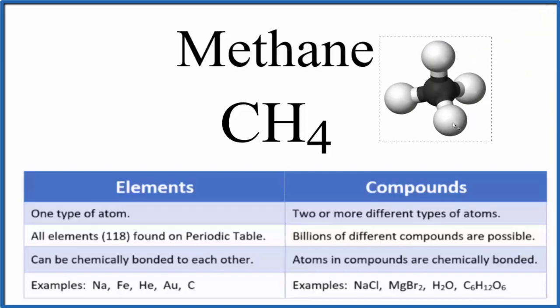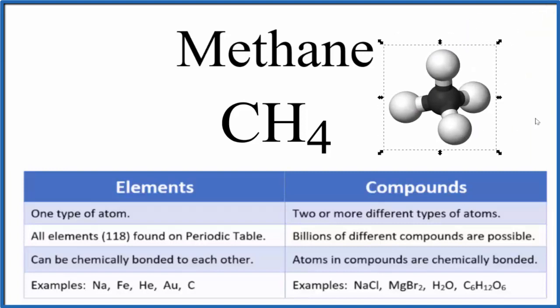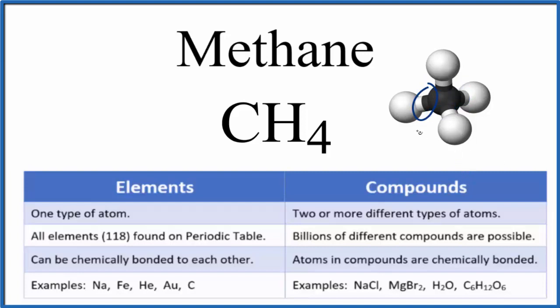Let's look at a molecular model of methane here. The carbon is in the center — that's the black — and the hydrogens are the white. These right here represent the chemical bond between the carbon and the hydrogen in the compound methane.